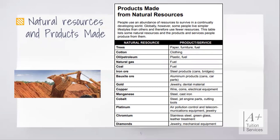Natural resources are used to make products so people use an abundance of resources to survive in the continually developing world. We use trees to make paper, furniture, and fuel. We use cotton to make clothing. We use oil and petroleum to make plastic and fuel. We use natural gas for fuel, and we can also use coal for fuel.